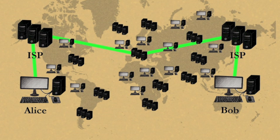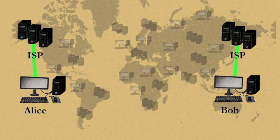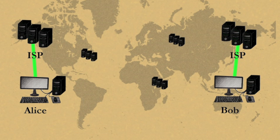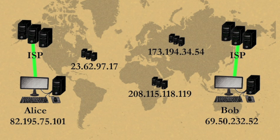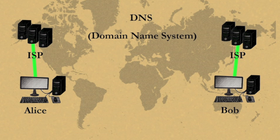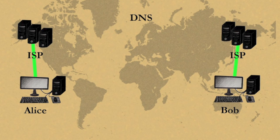In order to connect to a site, like your email provider, you need its address. This address is a string of numbers. Remembering the numbers for all of the sites that you visit isn't user-friendly. This is what the Domain Name System, or DNS, is for.